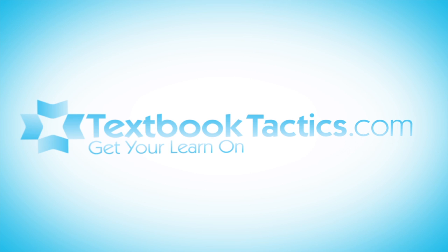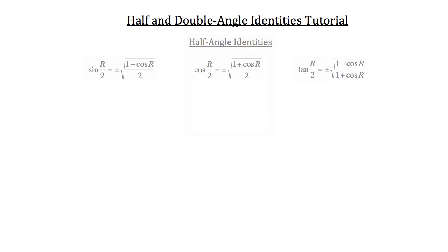This is the half and double angle identities tutorial. Let's begin by discussing the half angle identities listed below. Something important to notice about the half angle identities is that we're usually using these to find some angle that is not easily found on the unit circle, and we do that by taking half the angle of a common angle on the unit circle.